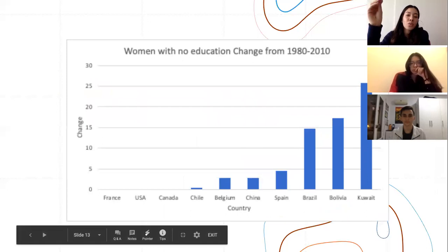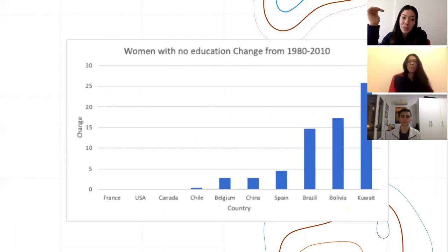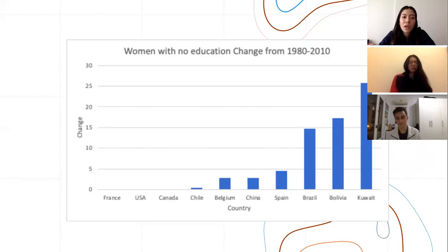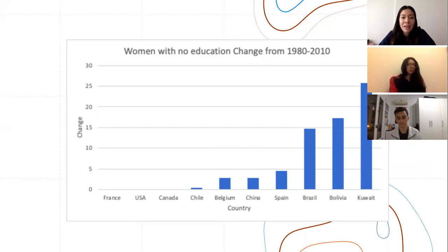We can see the women with no education change in a ranking. In countries such as France, the USA, and Canada, there hasn't been a change at all, because these are developed countries that have always been committed to having educated women. However, third-world countries did have a significant change, because nowadays there are more laws that cover women and more awareness on the topic. An interesting example is Kuwait — Latin American countries are now investing more and providing scholarships for women. In Kuwait, economic trouble was never the issue. There has been a cultural shift mainly linked to religion, and now women are able to access more education than before. Before, they had 25% of women with no education, and nowadays that doesn't exist at all.